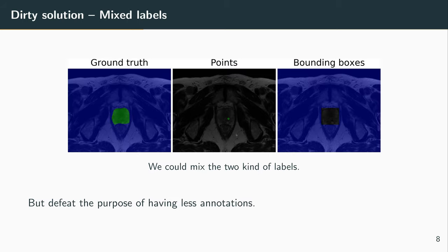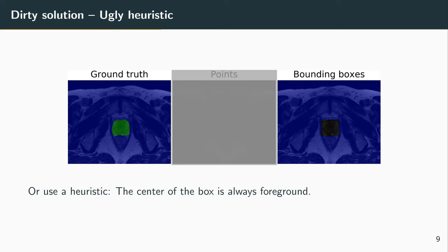There would be some dirty solutions for that. We could mix bounding box and points to have different partial cross-entropy, but then it actually gets close to what a real ground truth is. And the point is to reduce annotation tasks. So if we start doing several annotations per image, we lose a lot of interest in the method.